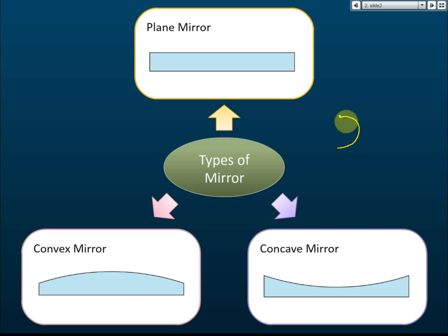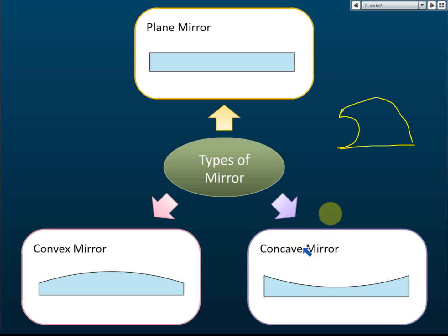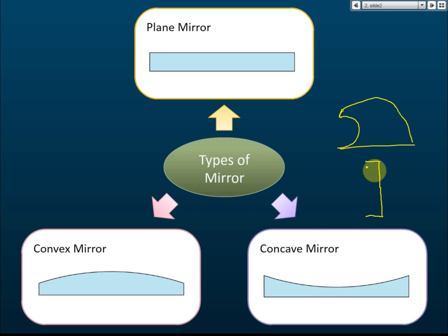For the concave mirror, you can see that it caves in. For example, imagine this is a hill, and this is the cave inside it. The concave mirror caves in to the hill — that's why we call it the concave mirror. So for a concave mirror, it caves in, like a cave. That's how you remember it.